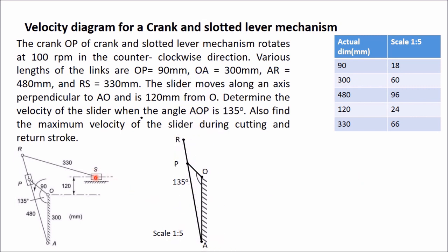Next, find point S. From O, extend the vertical line further by 120 mm, which at scale means 24 mm height. From this point draw one horizontal line. In this line you will get point S, where RS equals 330 mm, which means 66 mm at scale. From R as center, draw an arc of radius 66 mm — it intersects the horizontal line. Mark this intersection as point S.